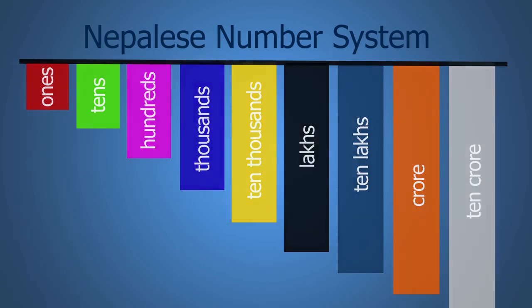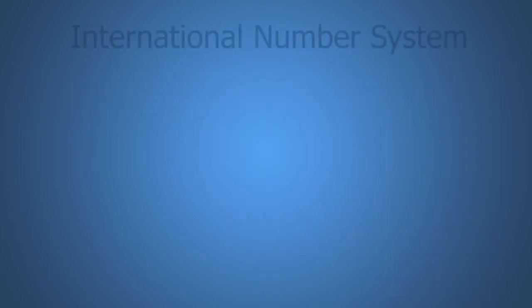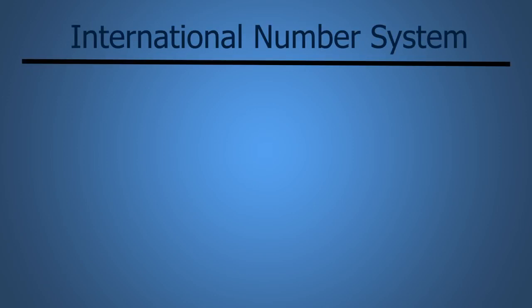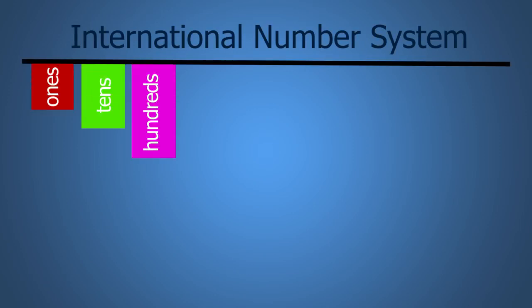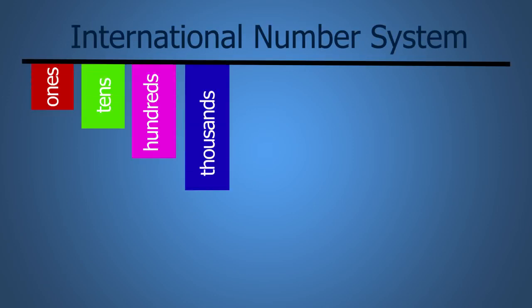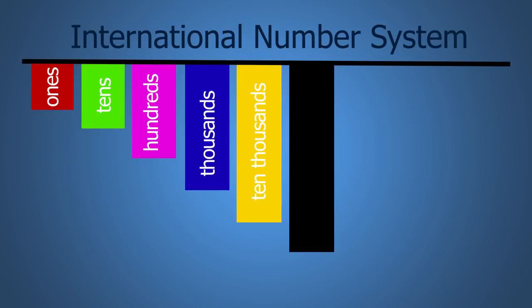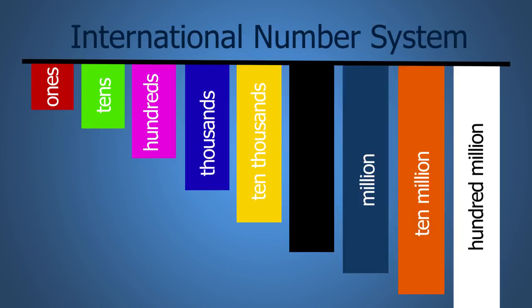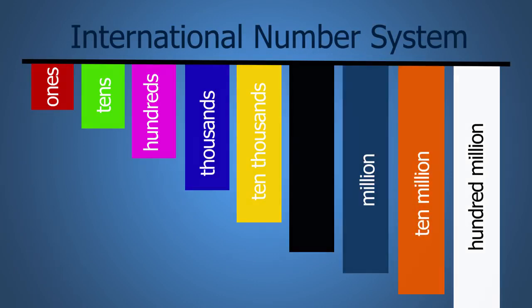But the international number system uses places like ones, tens, hundreds, thousands, ten thousands, hundred thousands, millions, ten millions, hundred millions, and so on. So there are some similarities, but they are not completely the same.